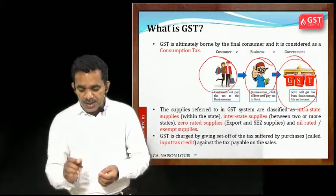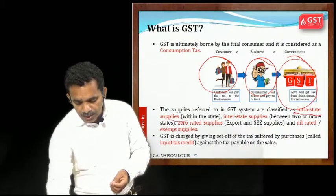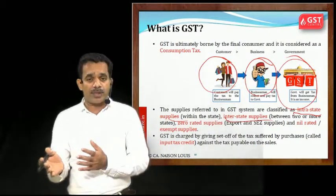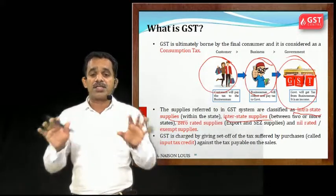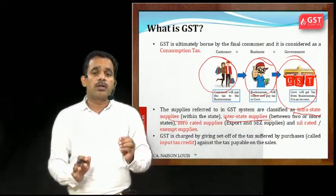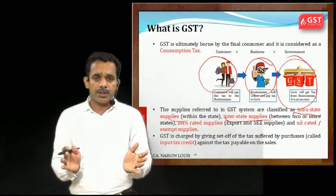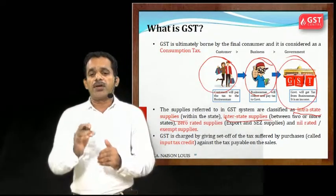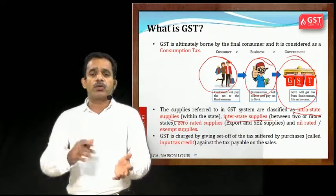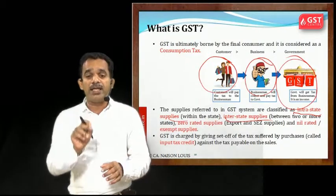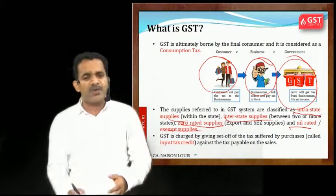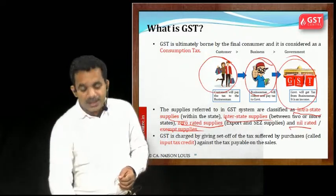Supplies in the GST system are classified as intrastate supplies and interstate supplies. Intrastate means within the state — for example, a person in Karnataka selling goods from Mysore to Bangalore, both within Karnataka. Interstate means selling from one state to another — for example, from Bangalore to Delhi. There can also be zero-rated supplies, nil-rated supplies, and exempt supplies.